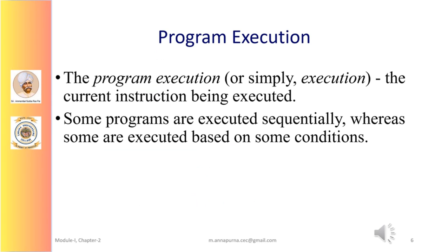Python starts executing instructions from the top of the program, moving down one after another. The program execution — or simply execution — is a term for the current instruction being executed. All programs do not execute statements sequentially. For example, in a program with flow control statements, the execution keeps jumping around the source code based on conditions, and sometimes we skip entire clauses.